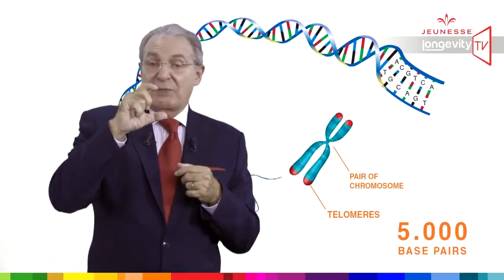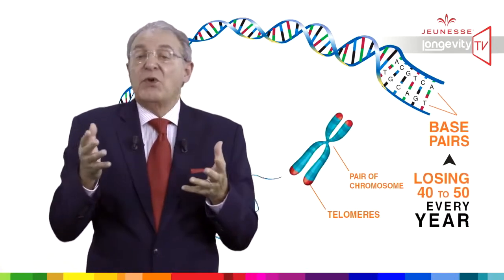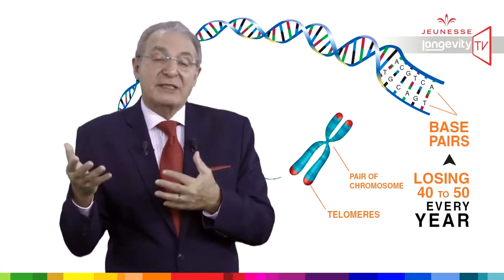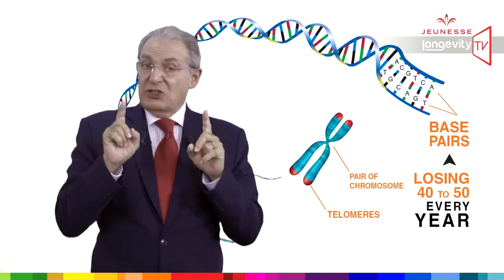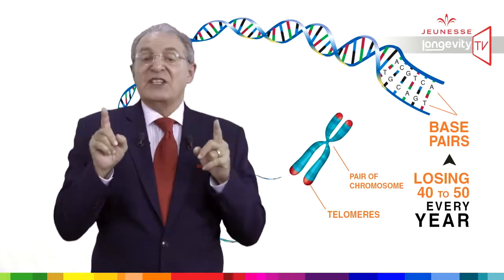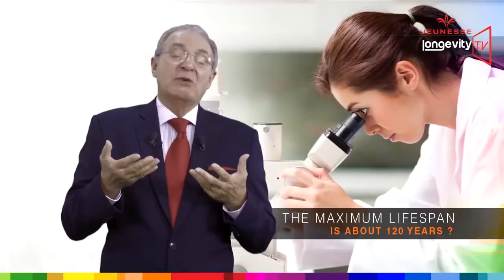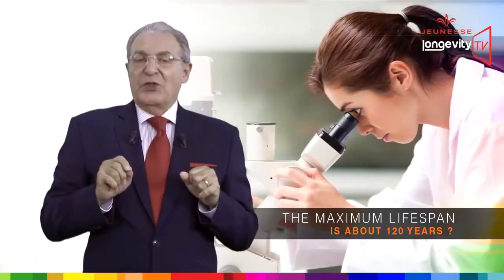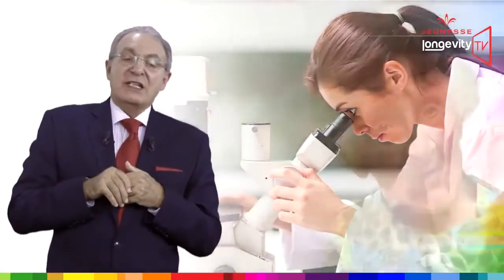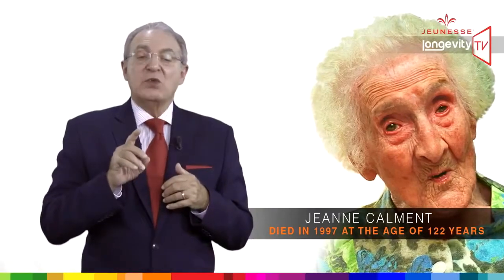In a sense, we start to die the minute we are conceived. When telomeres are reduced to 5,000 base pairs, our cells become senescent and die. We are losing approximately 40 to 50 base pairs every year, so theoretically it should take 120 years for all our telomeres to reach 5,000 base pairs. This is why some scientists believe that the maximum lifespan is about 120 years. The world record of longevity still belongs to Jean Calment, a French lady who died in 1997 at the age of 122.